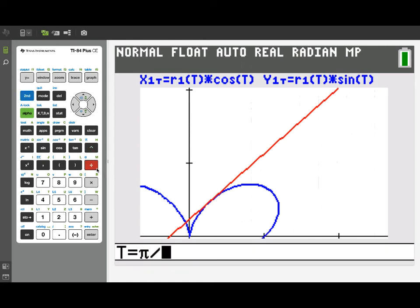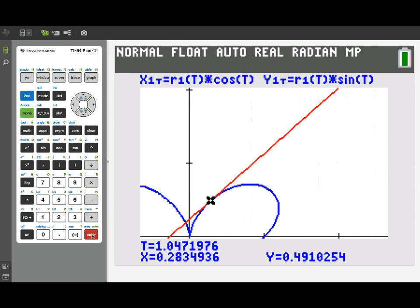Now we've got the parametric tracer. Let's go over to the point of tangency. We'll just enter pi over 3. There we are at that point. And we can see that that red line is doing a really nice job of just kissing the curve at that point of tangency.